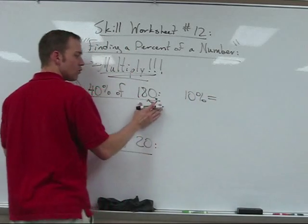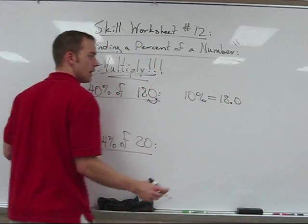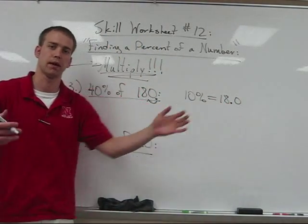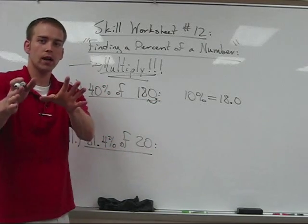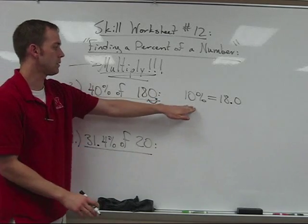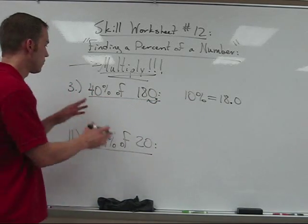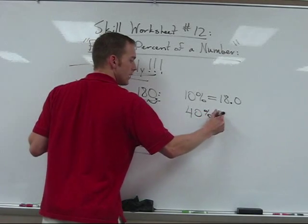So writing this down, 10% of 180 would be 18.0, and we can even put the zero in for emphasis to show you that the decimal just picked itself up and shifted itself once to the left. Why would I do this? Well, one big reason is because if I'm looking for 40%, I can easily manipulate 10% to be 40%.